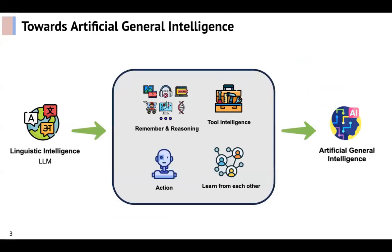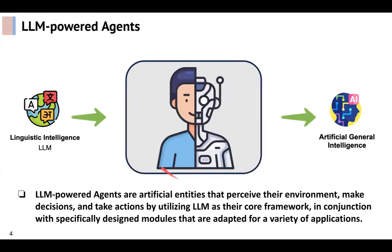Autonomous agents have long been recognized as a promising approach to achieving artificial general intelligence. In recent years, large language models have achieved notable success, demonstrating significant potential in attaining human-like linguistic intelligence. Along with this direction, researchers have developed numerous promising models, where the key idea is to equip LLMs with crucial human capabilities like memory and reasoning, tool intelligence, action, learning from each other, and so on. The LLM Powered Agents are artificial entities that perceive their environment, make decisions, and take actions by utilizing LLMs as their core framework.